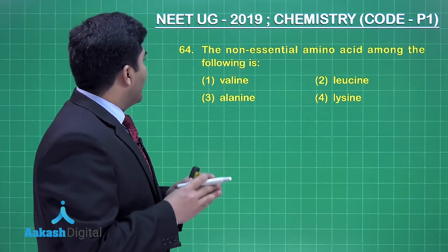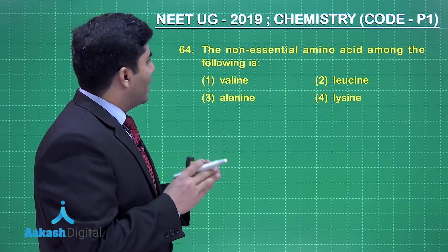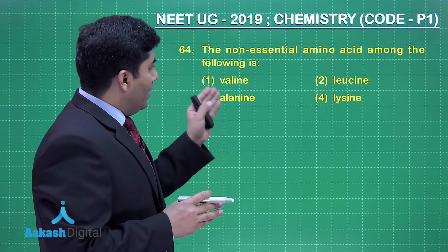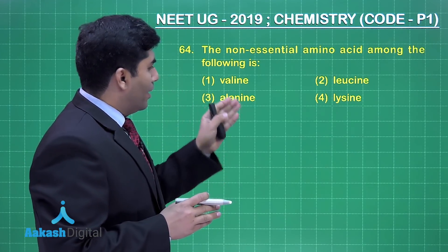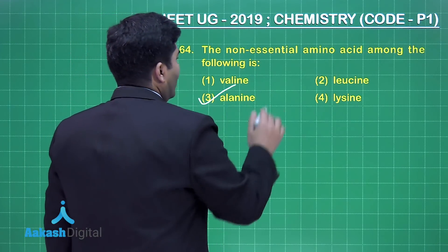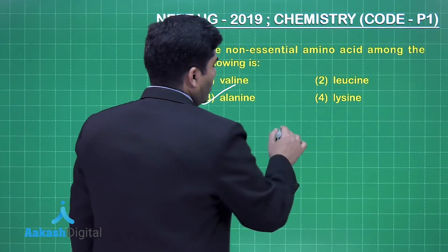Now in this question asking the non-essential amino acid among the following, four options are given: valine, leucine, alanine, lysine. And in the NCERT it is clearly written that alanine is the non-essential amino acid, so the answer is option number three.